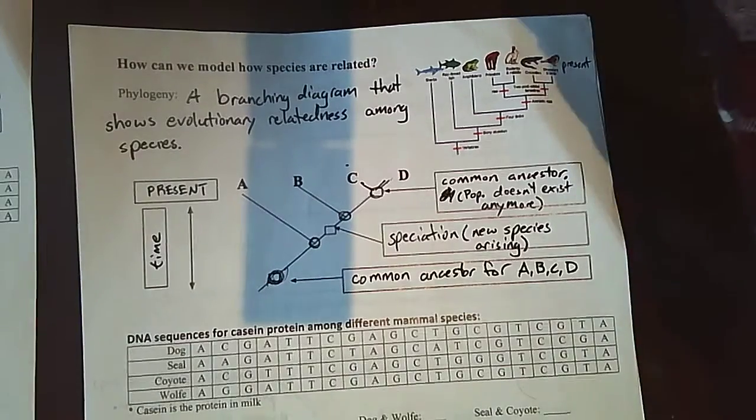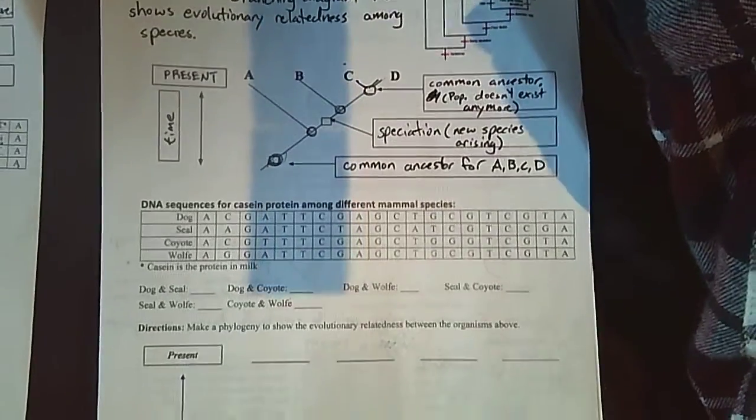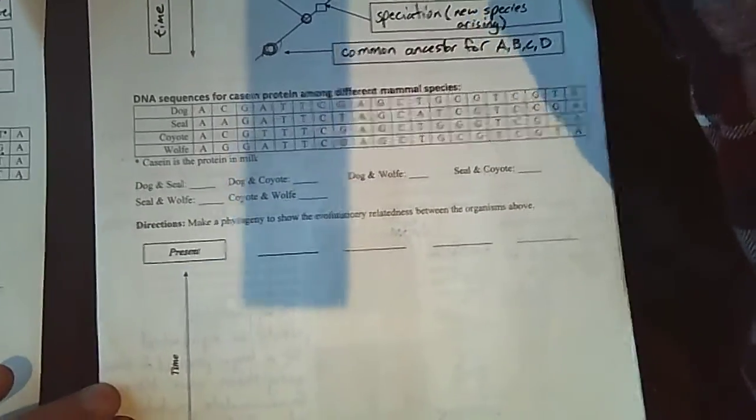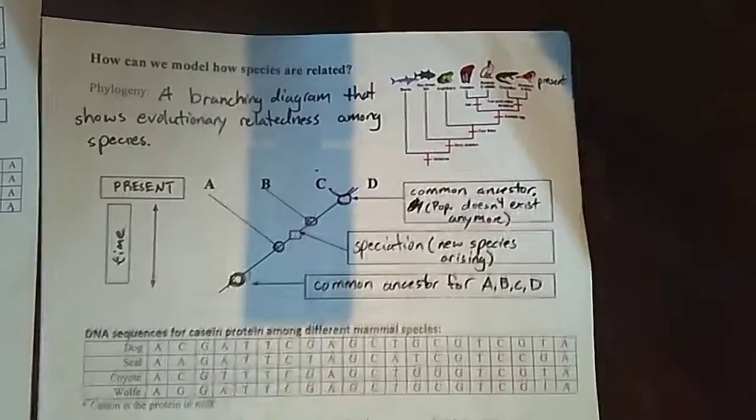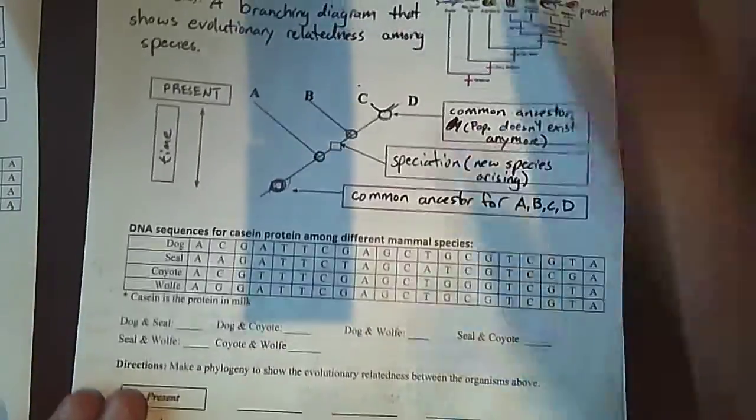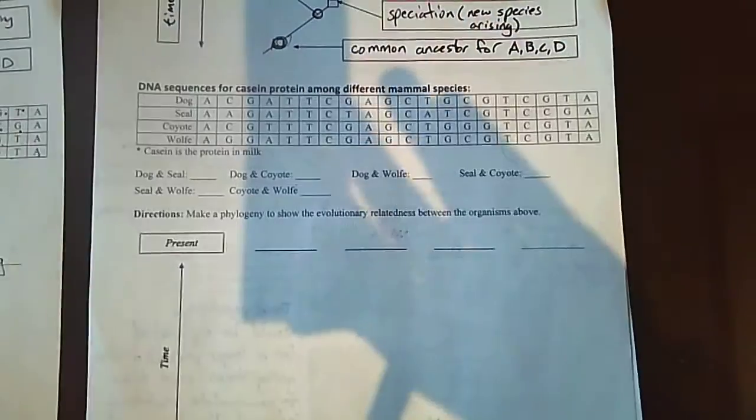What we're going to do, remember, our ultimate question is to see what's the most closely related living land mammal to a whale. But to do that, we've got to do a little bit more practice. We've got to understand why we have differences in DNA. We have to understand how to construct a model. Then we need to practice this first, and then you guys can try it on your own.